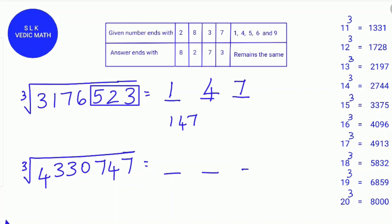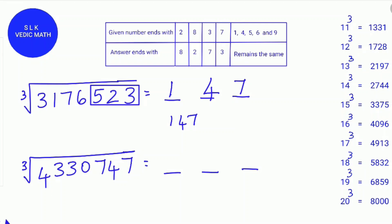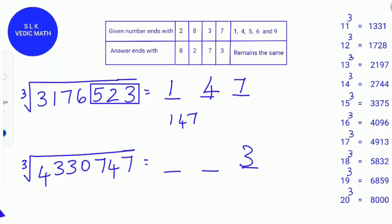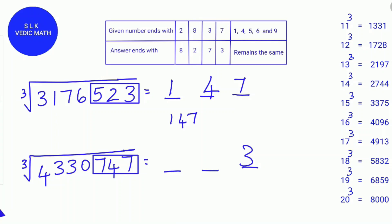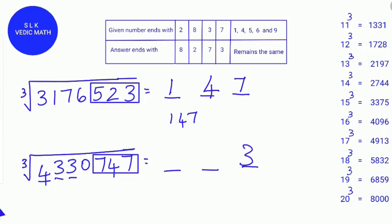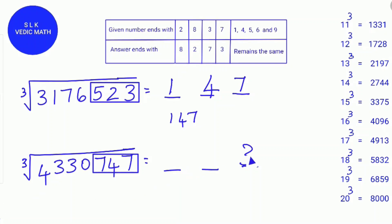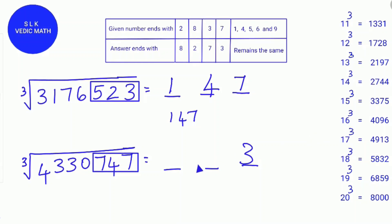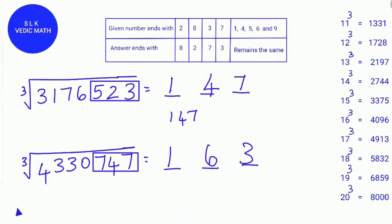4,330,747 ends with 7, so from the table the answer will end in 3. Box the last 3 digits (7, 4, 7); the remaining digits are 4, 3, 3, 0, considered as 4,330. Finding where 4,330 is in the cube table: 4,330 is between 16 cubed and 17 cubed, so we take 16. Therefore, the cube root of 4,330,747 is 163.